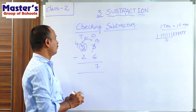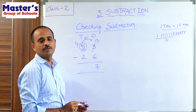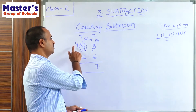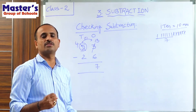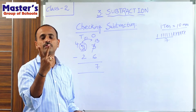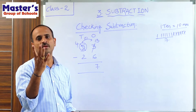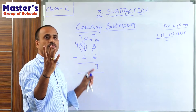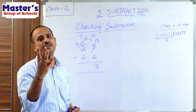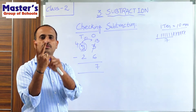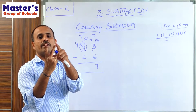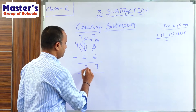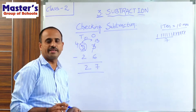Now go to the 10's place. 4 and 2 are present in the 10's place. Subtract 2 from 4: open 4 fingers, close 2 fingers — 2 fingers are left. So write 2 in the 10's place. The answer is 27.